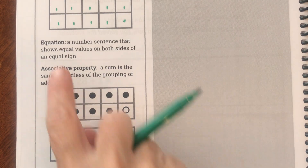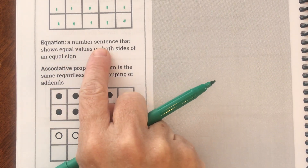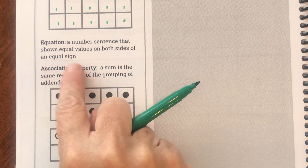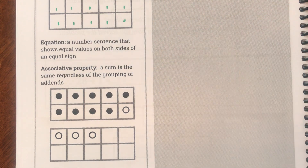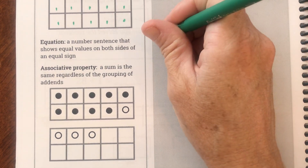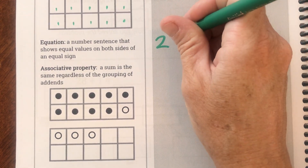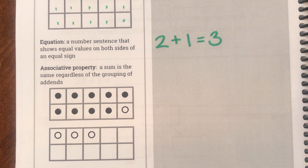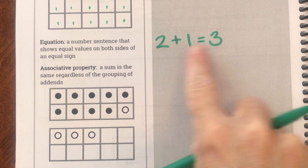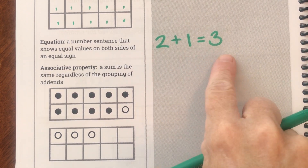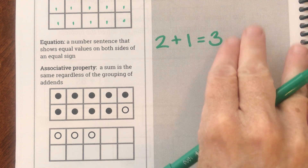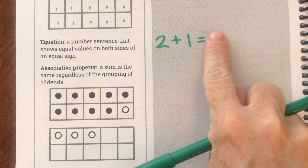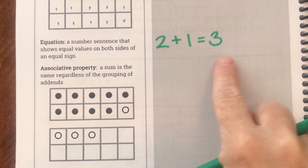Let's look at our next word: an equation. An equation is a number sentence that shows equal values on both sides of an equal sign. We've been writing an equation in most of our pages. I could say I have two apples plus one more apple means I have three apples — that is called an equation. Both sides of the equal sign are equal: two plus one is three, and over here I have a three.